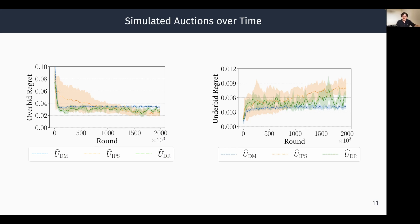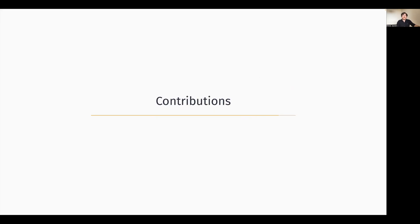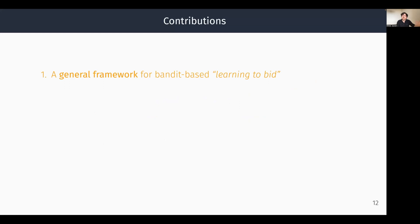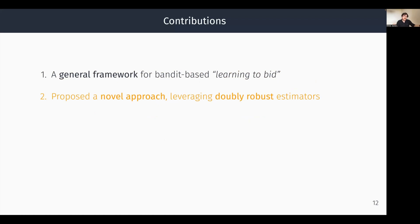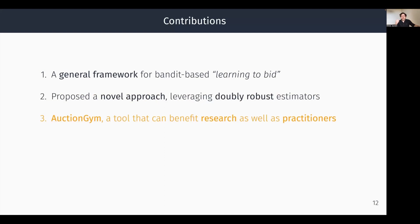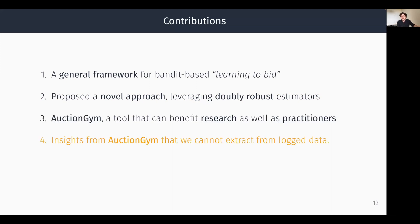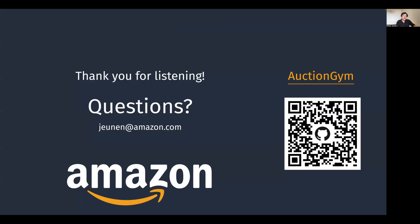To conclude, our core contributions are: a general framework for bandit-based learning to bid, which allows us to view existing approaches through a new lens and propose novel approaches leveraging doubly-robust estimators; the introduction of Auction Gym, a tool that can benefit both researchers and practitioners; and insights gained through Auction Gym that cannot be straightforwardly extracted from log data. There is much more detail in the paper, and I encourage you to read it. Thank you for listening — feel free to reach out with questions, and scan the QR code to visit the Auction Gym GitHub repository.